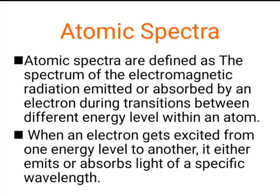Atomic spectra are defined as the spectrum of electromagnetic radiation either emitted or absorbed by an electron during transitions between different energy levels within an atom. There is absorption spectra and emission spectra. When a ground-state atom or electron absorbs energy, it goes to an excited state and then returns to the ground state with emission of some amount of energy. When an electron gets excited from one energy level to another, it either emits or absorbs light of a specific wavelength.